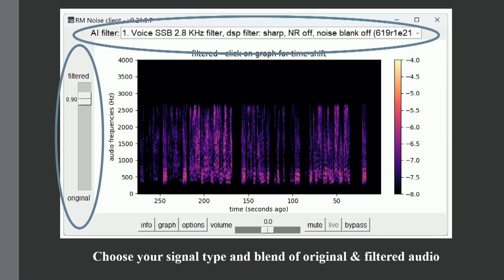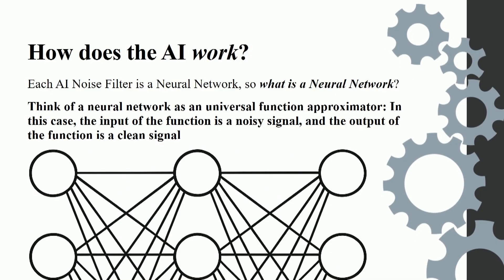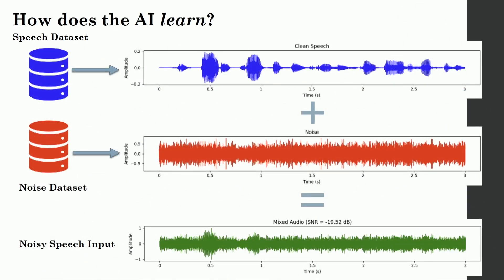I'm pretty much a Luddite when it comes to implementing some of these canned programs, but I actually found Randy's system to be quite easy to navigate. It looks harder than it really is when you're looking at these slides. The bottom line is that AI learns what it means to have a signal — a CW signal or a sideband signal — and then it learns what noise is. By that learning mechanism, it's able to remove the noise from the signal.